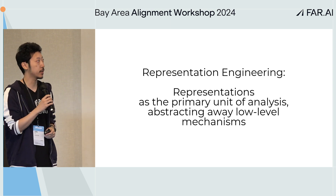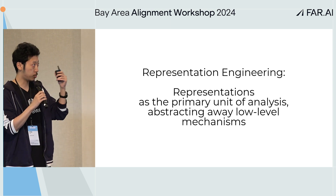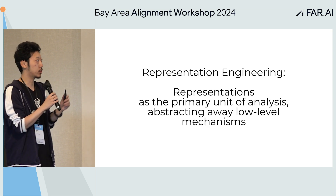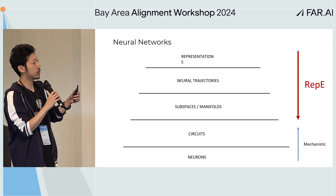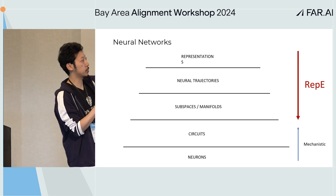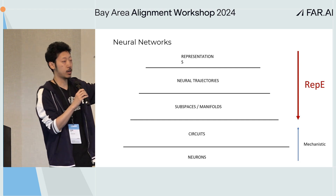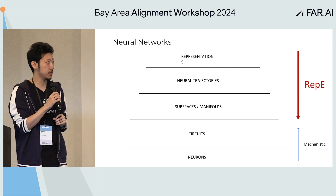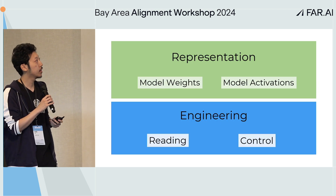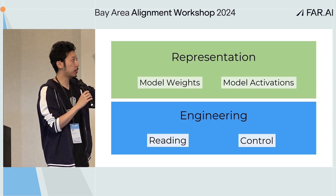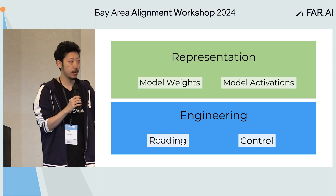So this is representation engineering. We look at representations as the primary unit of analysis and try to abstract away low-level mechanisms. We go top-down, looking at neural trajectories, subspaces, and larger chunks of representations, while the mechanistic view goes bottom-up. By representations, we mean both model weights and activations; by engineering, we mean reading, probing, and control.